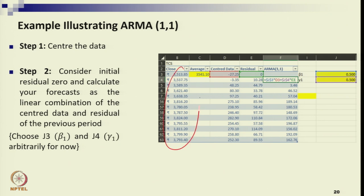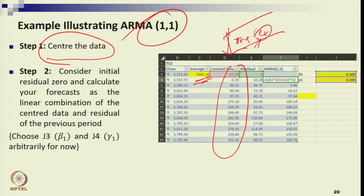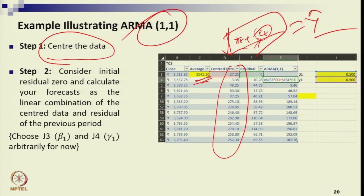Using the same TCS data for three months: first calculate the average, then center the data by subtracting the average from actual stock prices. These centered values are your small y_t. Residuals are initially assumed to be zero — the same approach used in the moving average process. We require two coefficients: beta1 and gamma1.